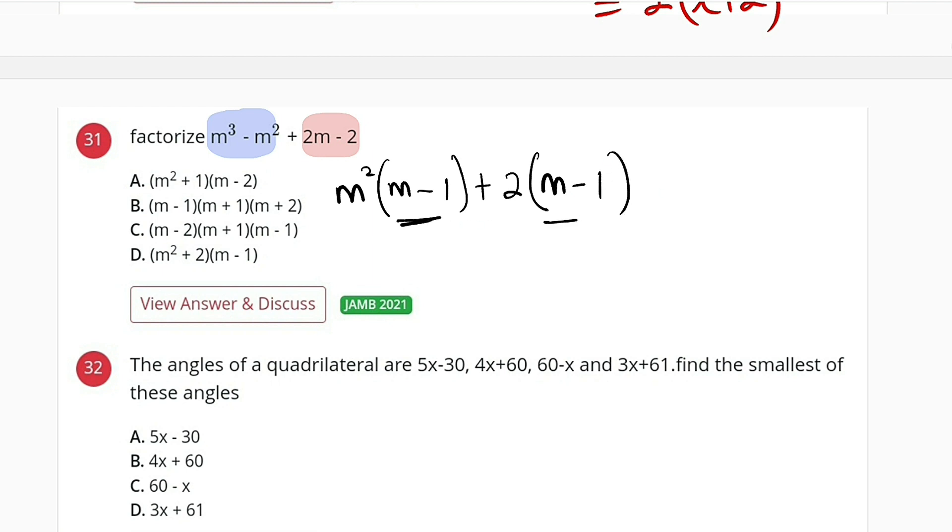In the brackets we have common terms, so we have (m - 1) outside. From the first term we have m², from the second term we have 2.